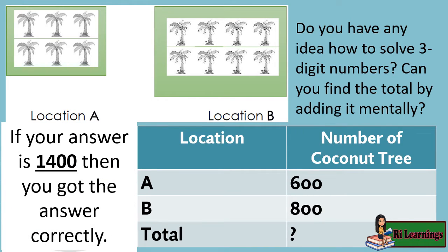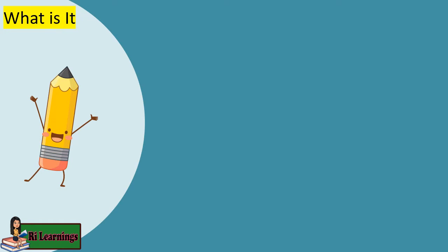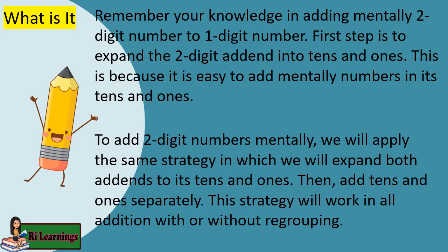If your answer is 1,400, then you got it correctly. Remember your knowledge in adding mentally two-digit numbers to one-digit numbers. The first step is to expand the two-digit addend into tens and ones, because it is easy to add mentally numbers in their tens and ones. To add two-digit numbers mentally, we apply the same strategy: expand both addends to their tens and ones, then add tens and ones separately. This strategy works in all addition with or without regrouping.